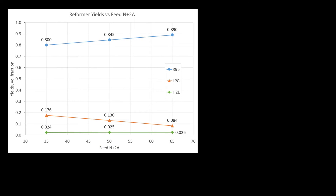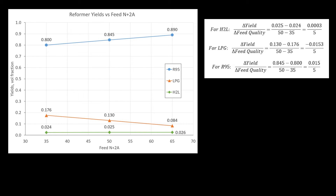In the reformer submodel, we select N plus 2A base value to be 50, and then we calculate the change in yield per change in feed quality. You can see here the calculations discussed — each one shows the delta in yield divided by the delta in feed quality using the points on the chart. Feel free to pause here and study.